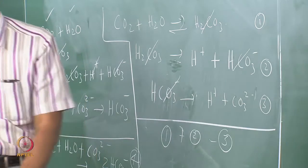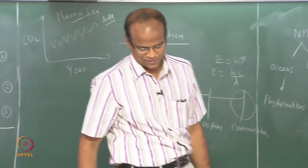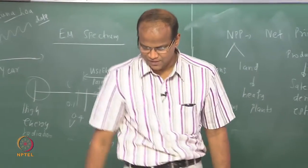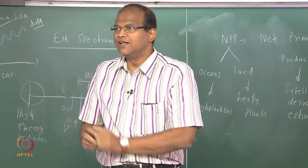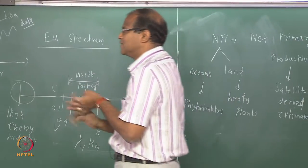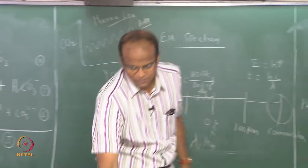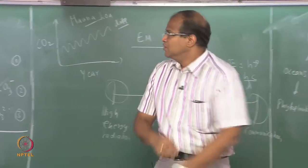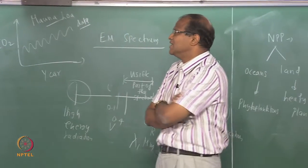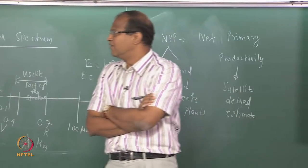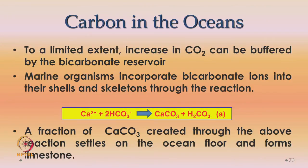There is a lot of activity going on — carbonate, bicarbonate, carbonic acid — all these. The dissolved CO₂ equilibrates with atmospheric CO₂ at the surface of the ocean. To a limited extent, an increase in CO₂ can be buffered by the bicarbonate reservoir. The bicarbonate reservoir acts as a boon to us — it captures all the CO₂, puts it as bicarbonate, and keeps it from being released into the atmosphere.